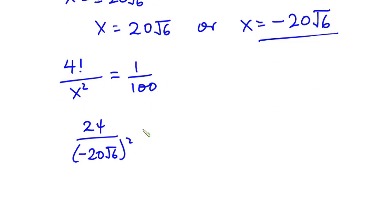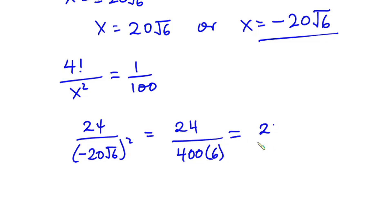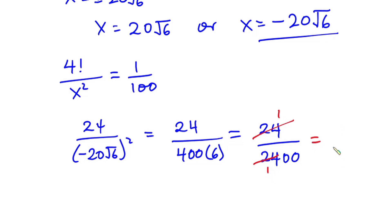Simplifying, we have 24 over — negative 20 squared is positive 400, and square root of 6 squared is 6 — so this is 24 over 2400. We can cancel: 24 goes into 24 once and into 2400 one hundred times, giving us 1 over 100. So these values satisfy the equation.